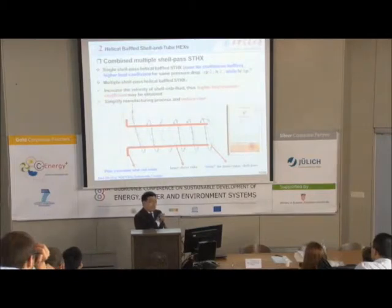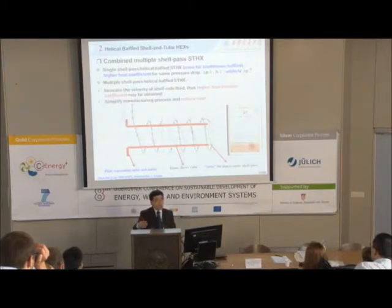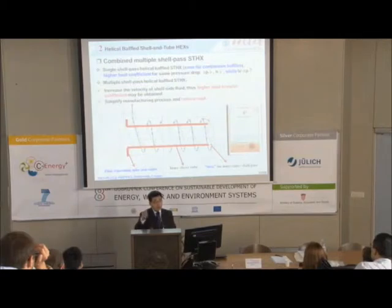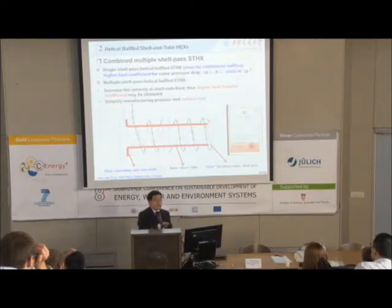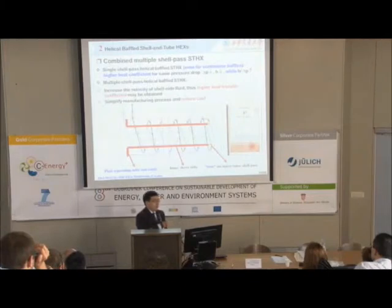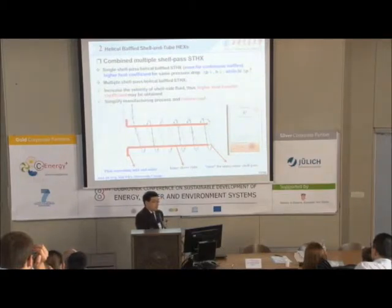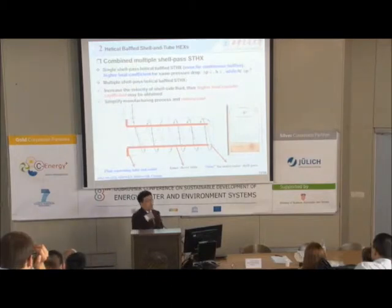To address this, we proposed a multi-shell pass helical baffle heat exchanger. In this design, the outer shell pass uses the helical baffle and the inner shell pass uses the traditional baffle style. This approach allows relatively easy manufacturing. The shell side fluid first flows through the outer shell pass, then changes direction to the inner shell pass. This configuration forces the shell side fluid to change direction and decreases the cross-sectional flow area, increasing the shell side velocity under the same mass flow rate, and also increasing the temperature difference.